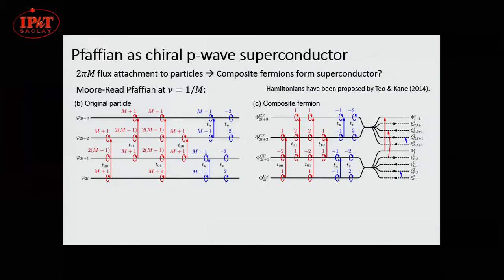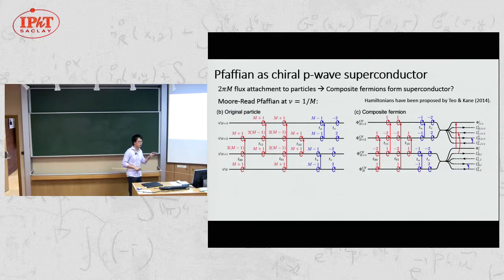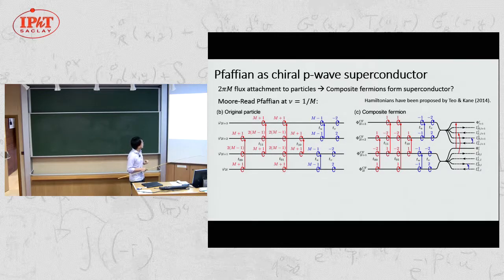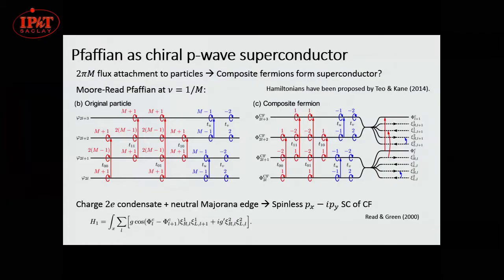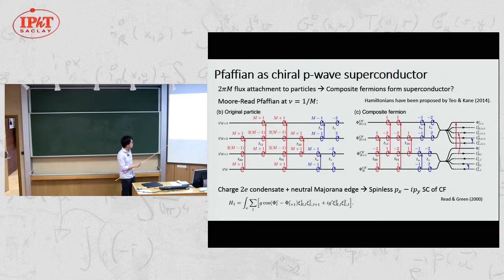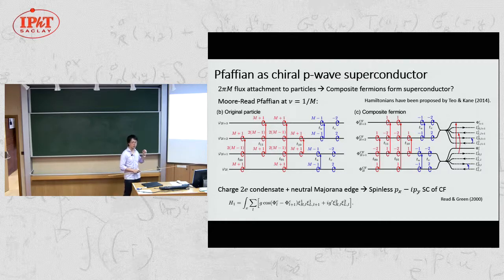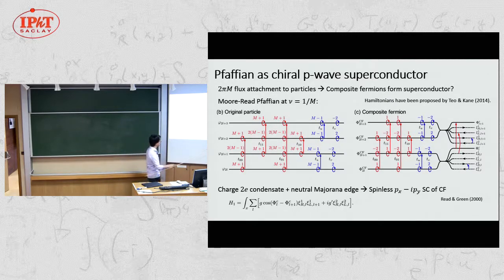Now I focus on filling fraction 1/2 plus integer. In the composite fermion picture, composite fermions effectively see zero magnetic field on average and can form either a Fermi liquid or a superconductor. At 1/2 or 3/2, it looks like a compressible state. At 5/2, it may give an incompressible state that might be non-Abelian. We can find the tunneling Hamiltonian for filling fraction 1/2. In terms of composite fermions, the tunneling becomes tunneling between the same branch — right to right or left to left — which cannot gap the system but instead modifies the Fermi surface structure, giving an open Fermi surface for the composite fermion. This is how we construct the composite Fermi liquid.